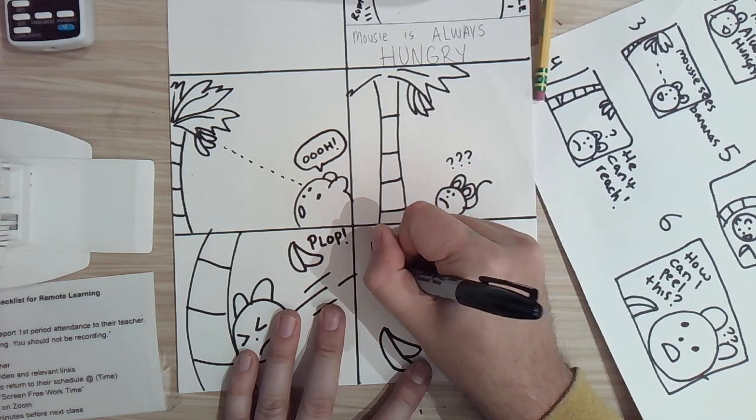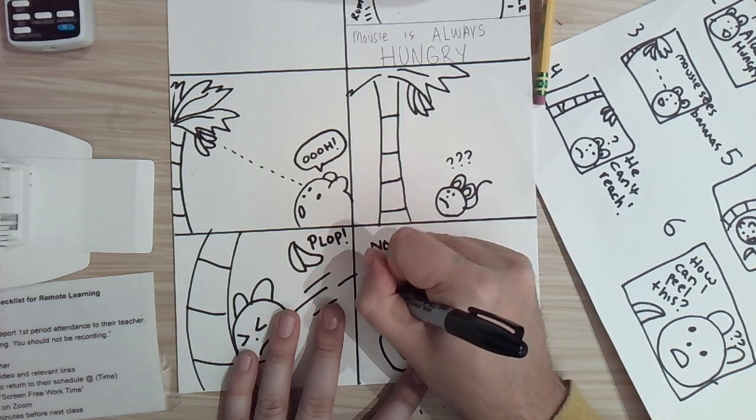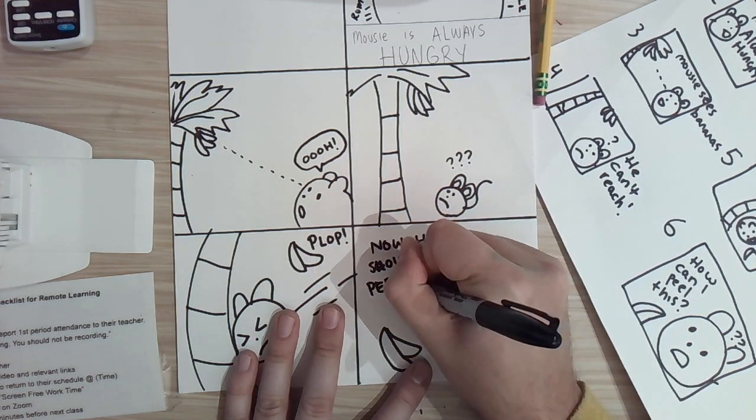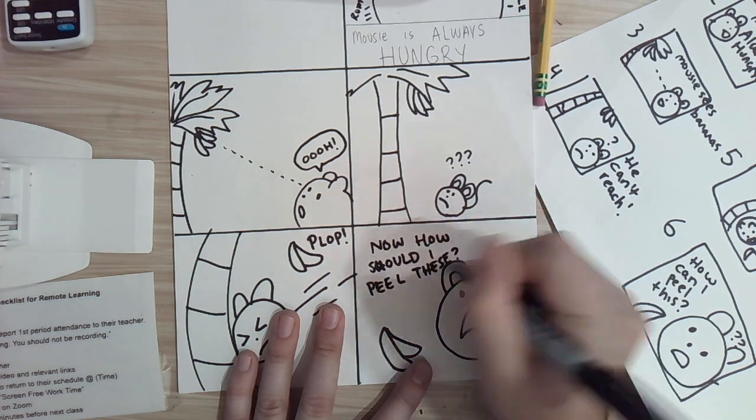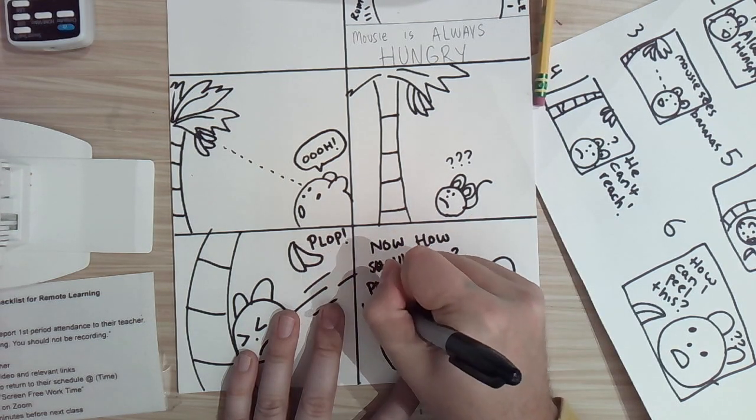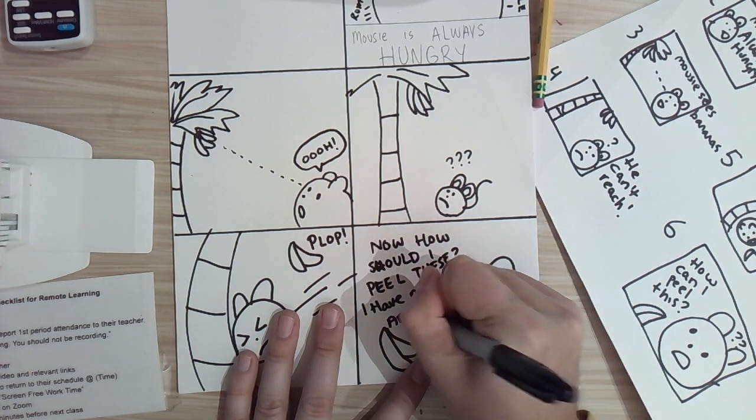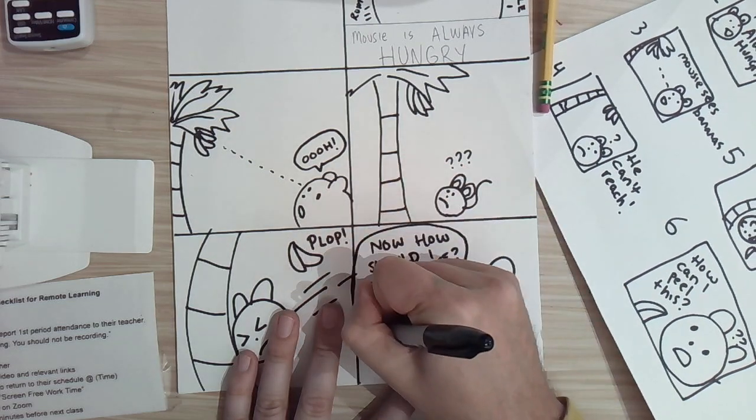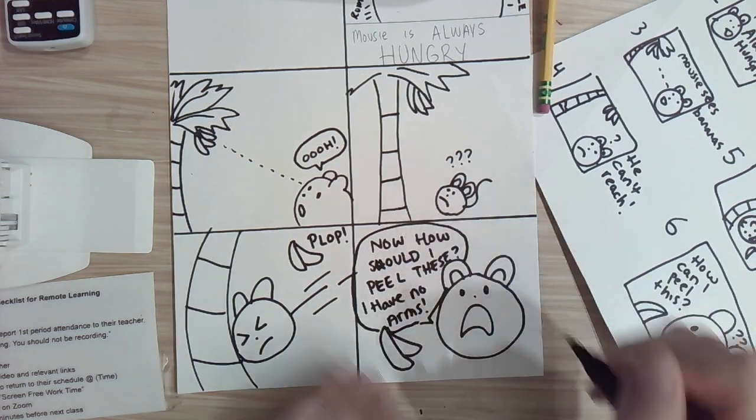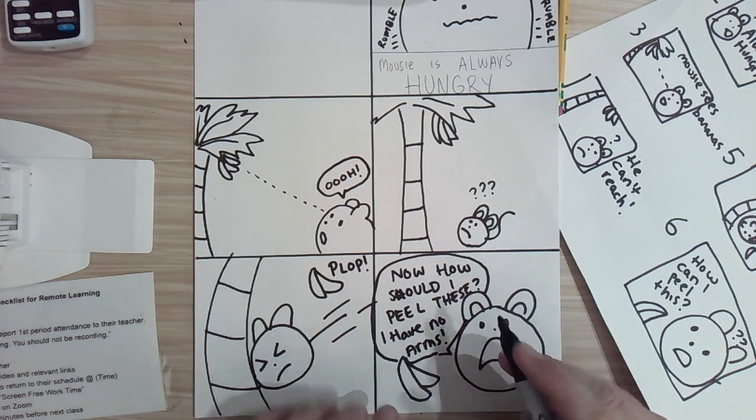S-H-O-U-L-D, I peel these? I have no arms. And that's going to be a speech bubble. So, you saw I made a little mistake there. It's probably good for you to do all of your writing in pencil first.